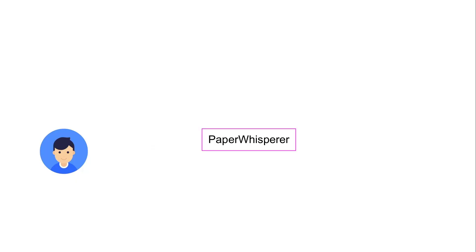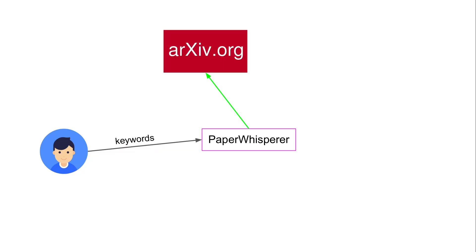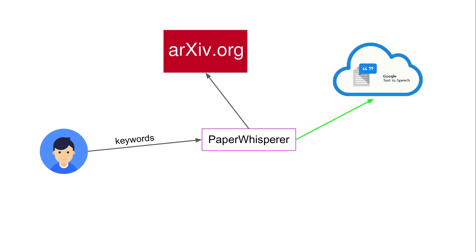Users can interact with Paper Whisperer by inputting keywords like, for example, generative music or image processing. Paper Whisperer will fetch the latest papers published on arXiv.org which have a reference to these keywords. Then it will create summaries for these papers and issue a request to Google Text-to-Speech to create a voice-rendered version of these summaries. The voice version of these summaries is then stored locally and can be accessed and consumed by the user.